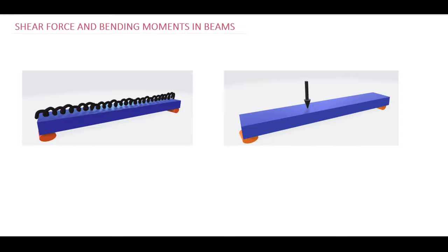A beam is a structural element which is subjected to loads transverse to its axis. In the figure you can see a beam supported by roller supports. The load acting on the beam is a distributed load, represented in black. This beam is loaded transversely, meaning the load acts in the direction perpendicular to the axis.